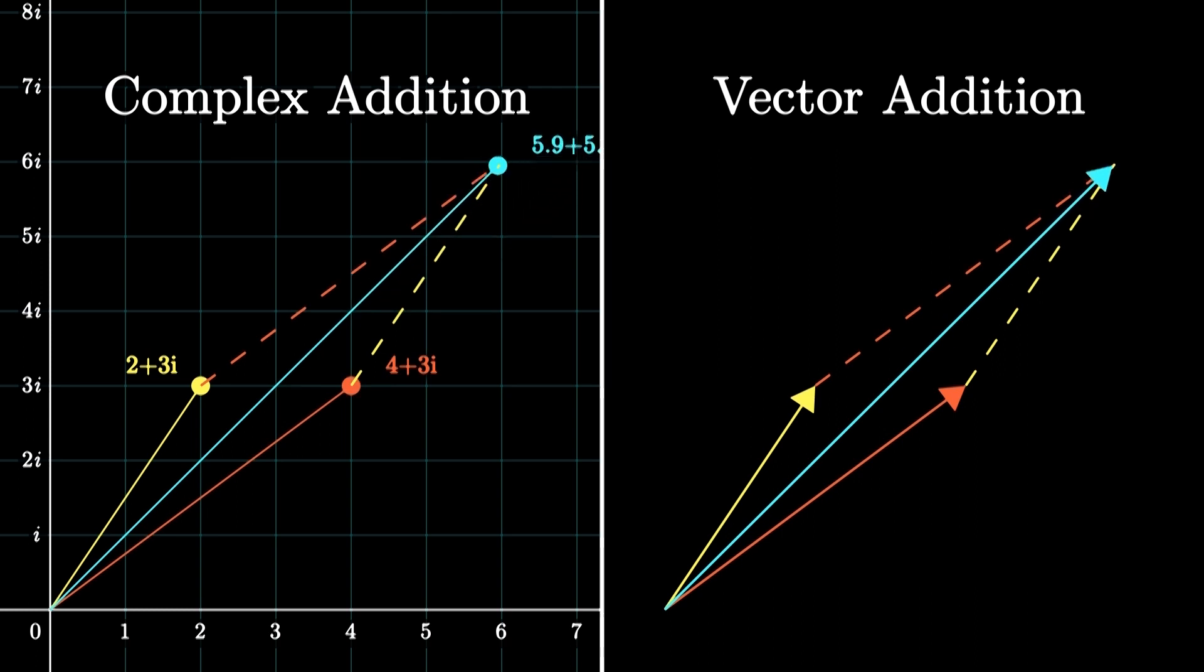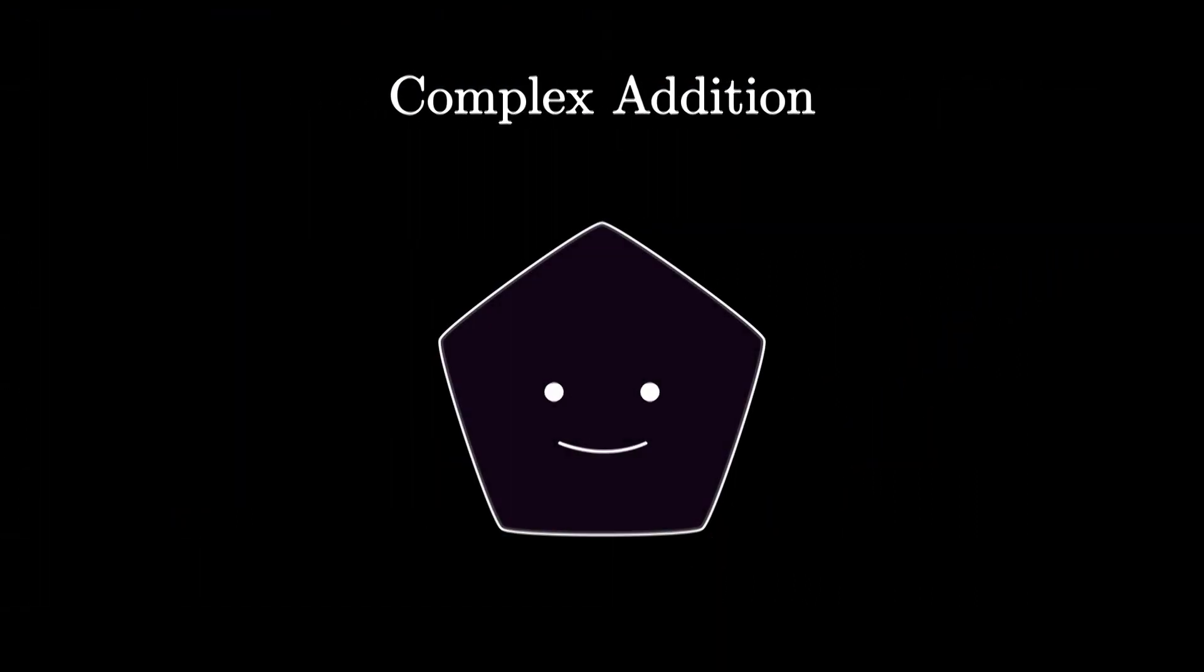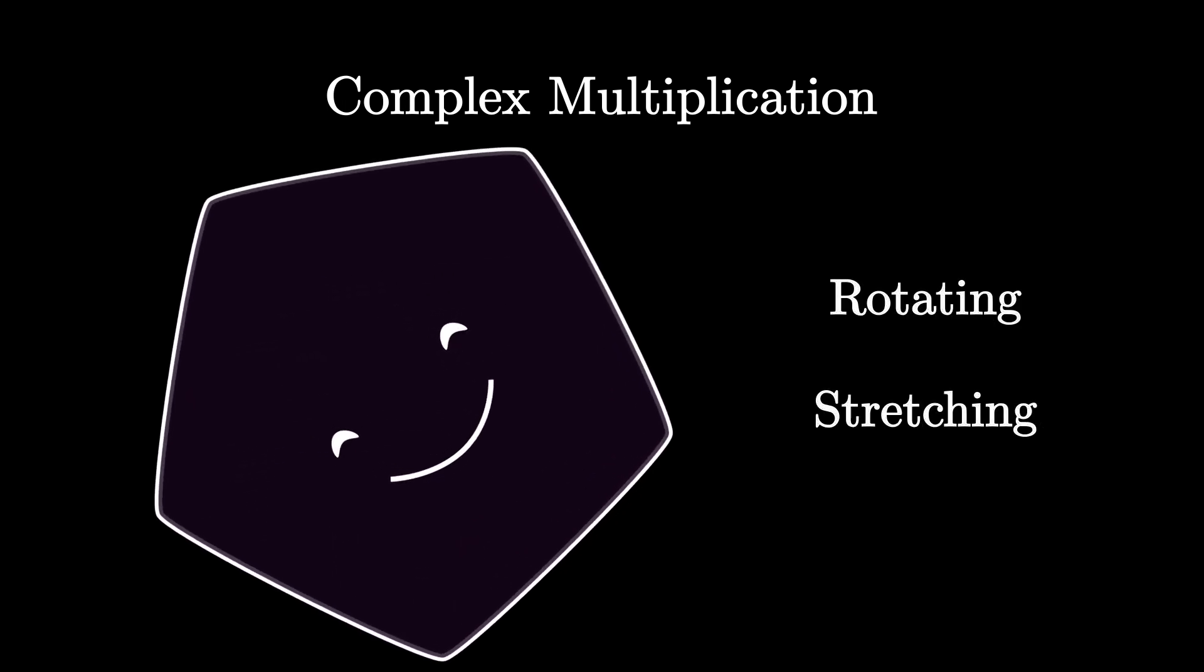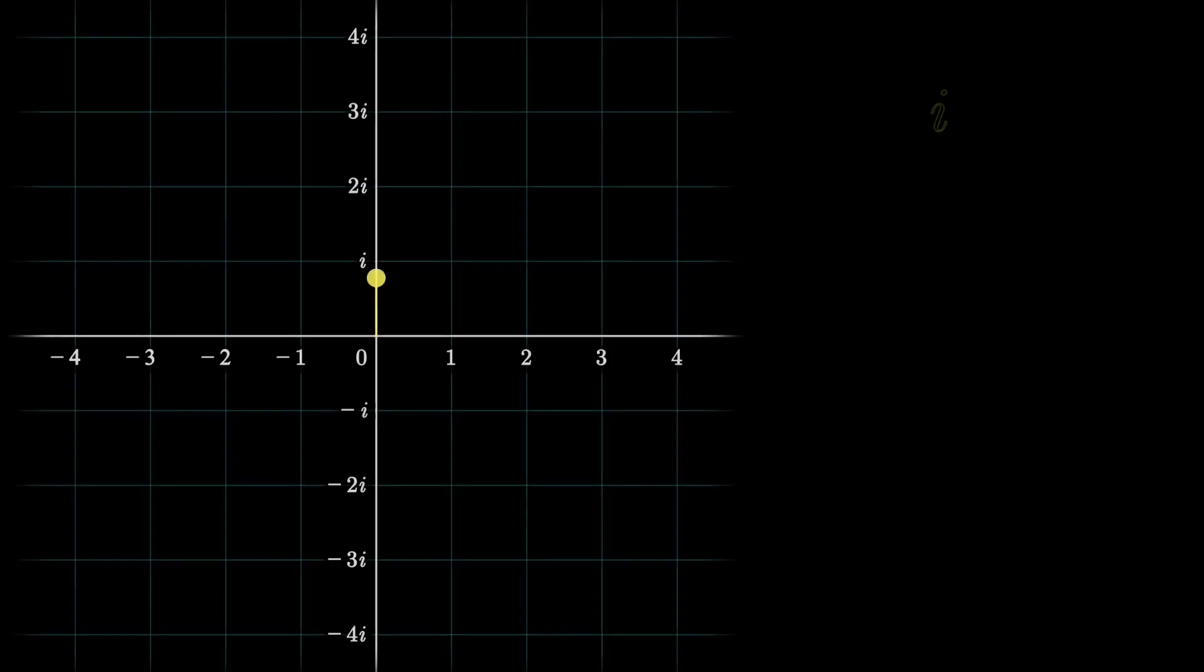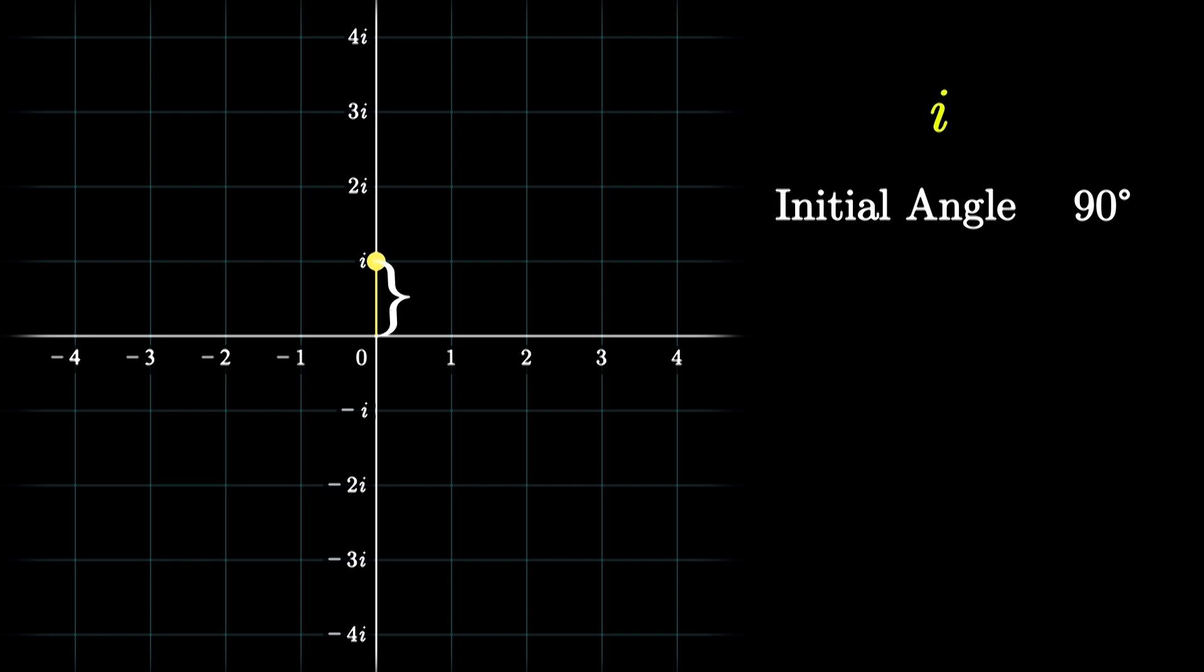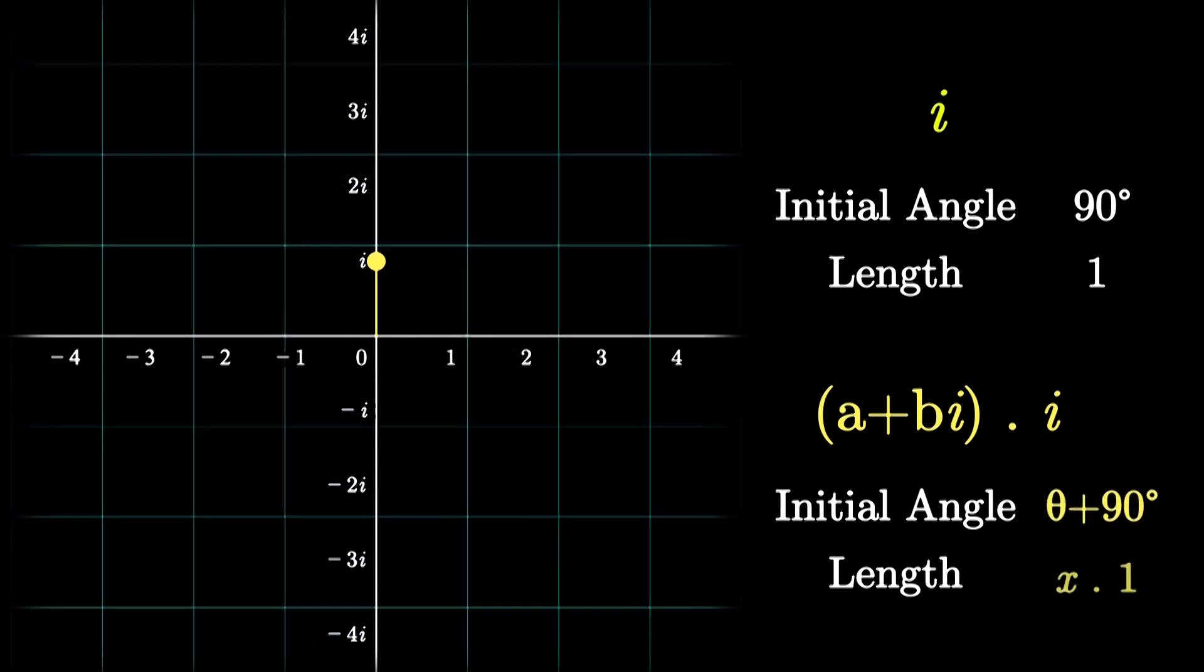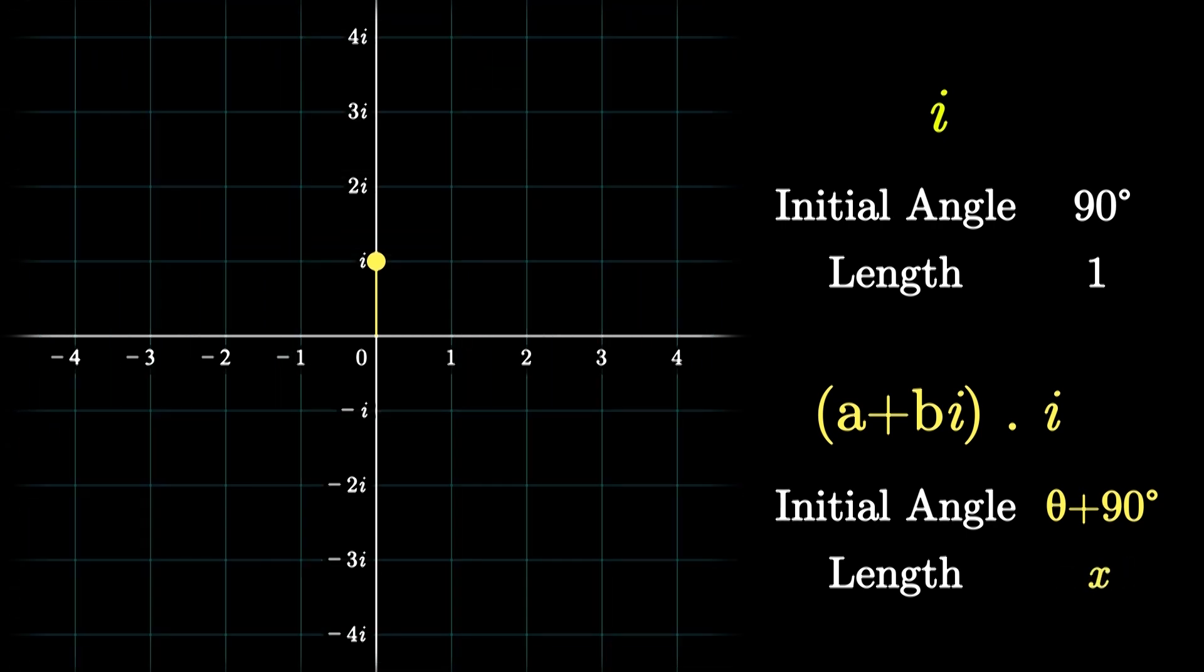So naturally now you might be thinking, well, addition is all well and clear, but what does multiplying two complex numbers look like? Well it's even cooler. Multiplying a complex number by another is the same as rotating and stretching that number. For example, i is a number whose initial angle with the real axis is 90 degrees and its length from the origin is 1. So multiplying any number by i will be like taking that number and rotating it by 90 degrees, and also stretching it by 1 times, which in this particular case there's nothing more to it.